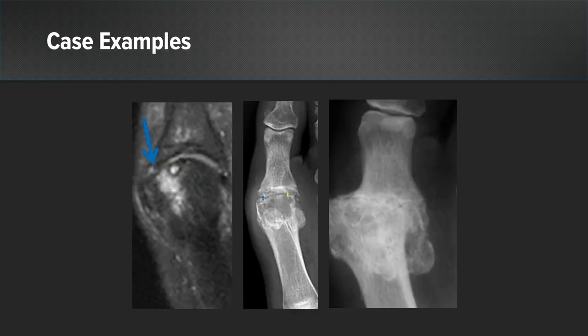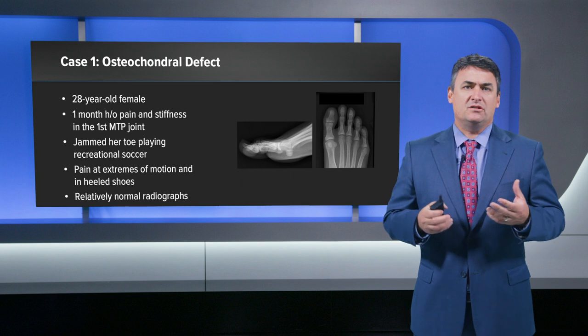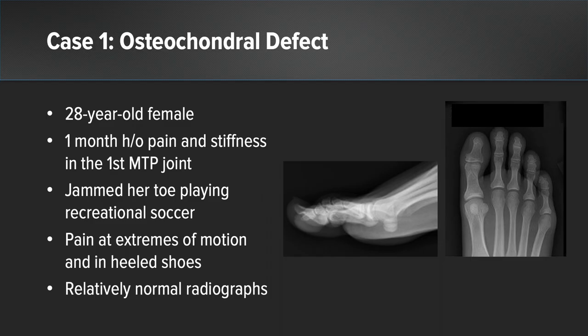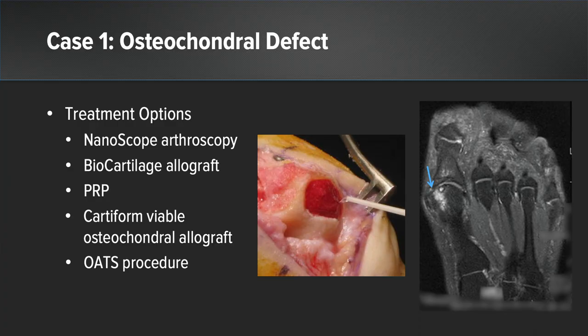Case one is a 28-year-old female with a one to two-month history of pain and stiffness in the first MTP joint. She jammed her toe playing recreational soccer a few months ago and has continued having pain since. She has pain at the extremes of motion and in heeled shoes, and her x-rays look radiographically normal. We get an MRI or CT scan, which often reveals an osteochondral defect, cystic lesion, or bone edema — addressable with nanoscope, arthroscopy, biocartilage for smaller lesions, Cartiform for larger lesions, or OATS for revision or very large lesions.